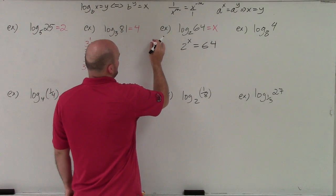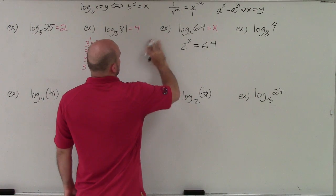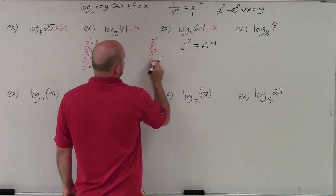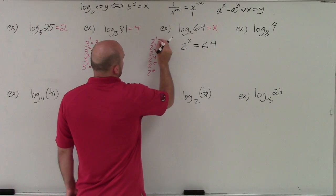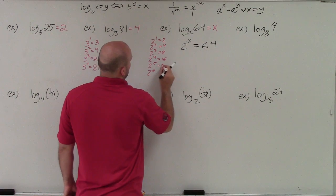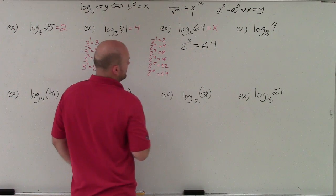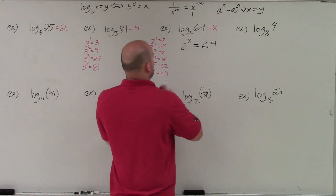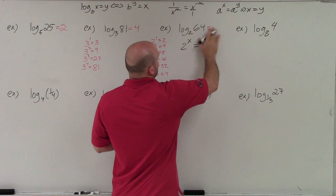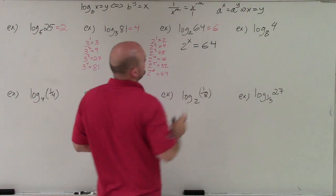And we'll get to the 1 to 1 property here in a second. But what we could do is just think about this. Well, if I know that 2 to the 1st, 2 to the 2nd, 2 to the 3rd, 2 to the 4th, 2 to the 5th, 2 to the 6th. 2, 4, 8, 16, 32, 64. So 2 to the 6th power. So therefore, I know that x, or that's equal to 6.